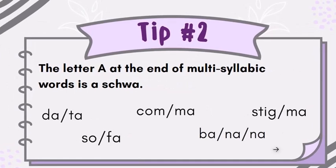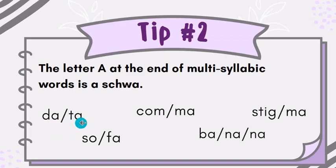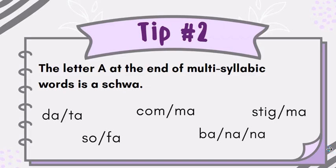Tip number two: the letter A at the end of multi-syllabic words is often a schwa. For example: data — we can't say de-te or de-ta, it's data. Karma, sofa, banana, stigma — all those final A's are saying 'uh.' I'm not saying always, usually most often, because these are tips, not rules.